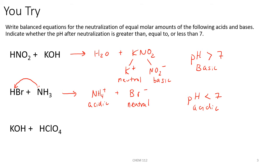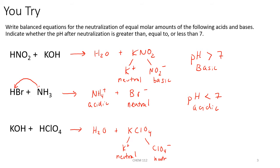In our last example, we have potassium hydroxide reacting with perchloric acid. From double replacement, we form water and the salt KClO₄, potassium perchlorate, made up of the potassium ion and ClO₄⁻, the perchlorate ion. The potassium ion is neutral — it's a Group 1A metal — and perchlorate is from a strong acid, so it's also neutral. After neutralization, the pH would be equal to 7, since we formed a neutral salt.